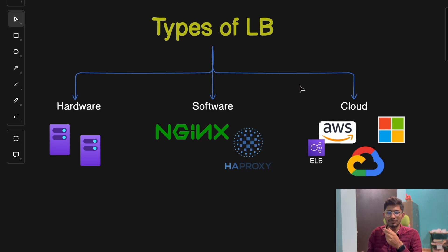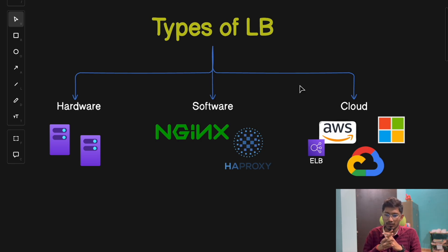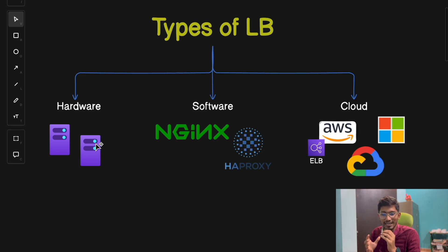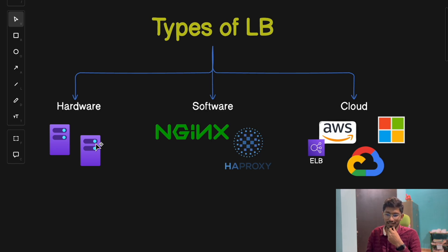Now that we know what a load balancer does, let's look at the different types. Each type is suited for specific scenarios and can be chosen based on the needs of your application or system. We'll break it down into three major types: hardware-based, software-based, and cloud-based load balancers. First, hardware-based load balancers are physical devices — like an actual box you would plug into a data center. They are highly specialized and can handle massive amounts of traffic efficiently.